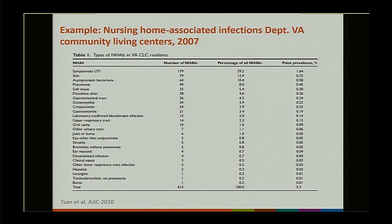To give you an example of the types of information we might learn from a prevalence survey, this table was taken from the Department of VA Community Living Center survey conducted in 2007. It represents a ranking of the different types of healthcare infections, how many people had nursing home onset infections, what percentage of all infections each type represented, and the point prevalence. From this table, symptomatic UTI was the most common type of VA onset infection, comprising 30% of all infection types.